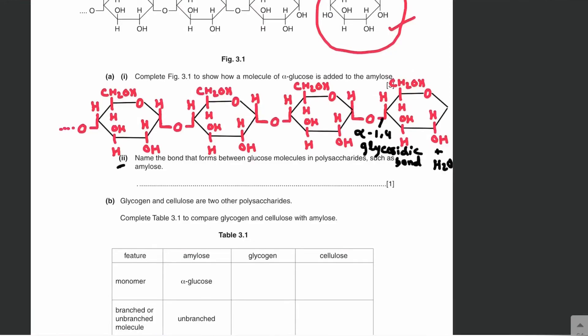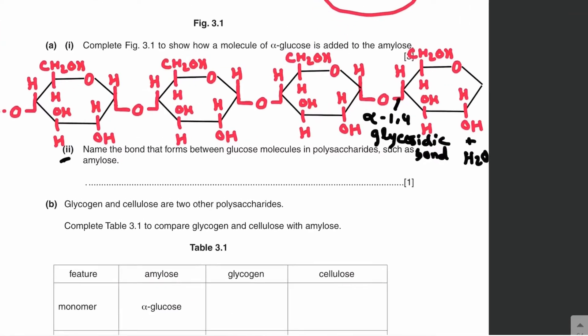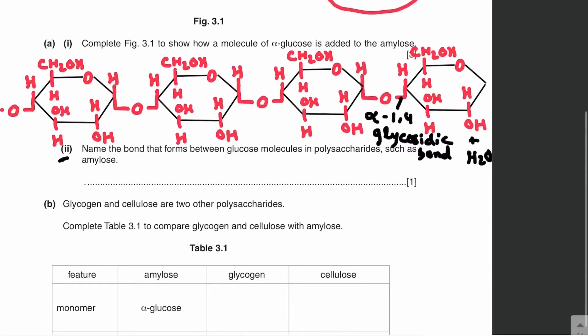Part two: name the bond that forms between glucose molecules in polysaccharides such as amylose. We have to name this bond, and this bond is the glycosidic bond.